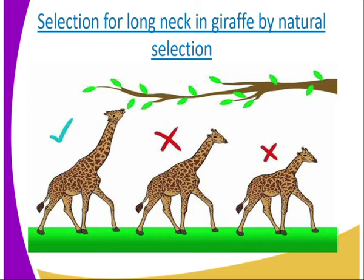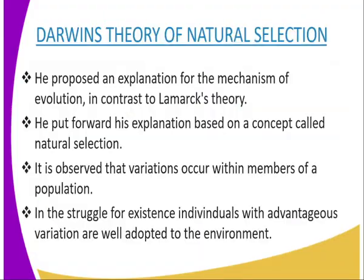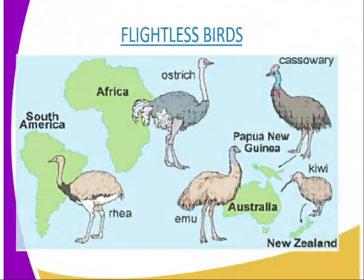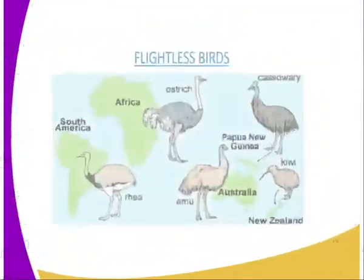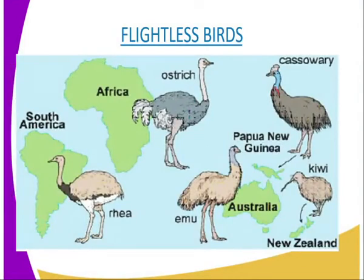Eventually, new long-necked species were formed. From a diagrammatic presentation, the short-necked giraffes cannot reach the twigs, but the long-necked giraffe has the ability to reach the twigs. Another example to illustrate Lamarck's theory is the appearance of flightless birds such as the ostrich, the emu, and kiwi.